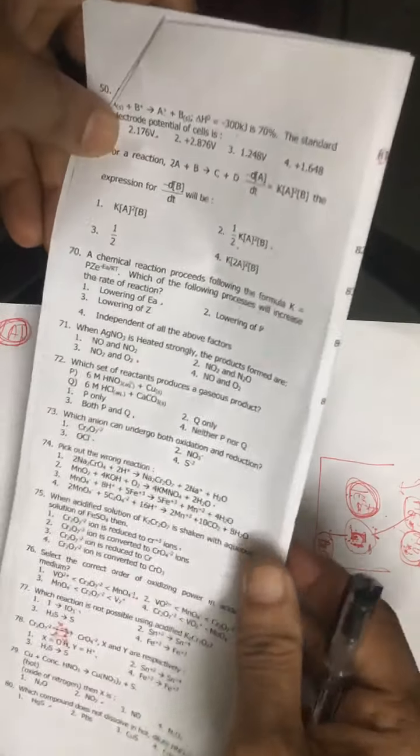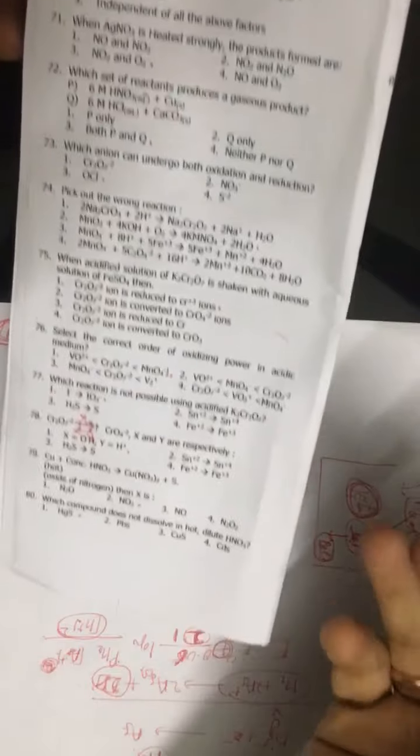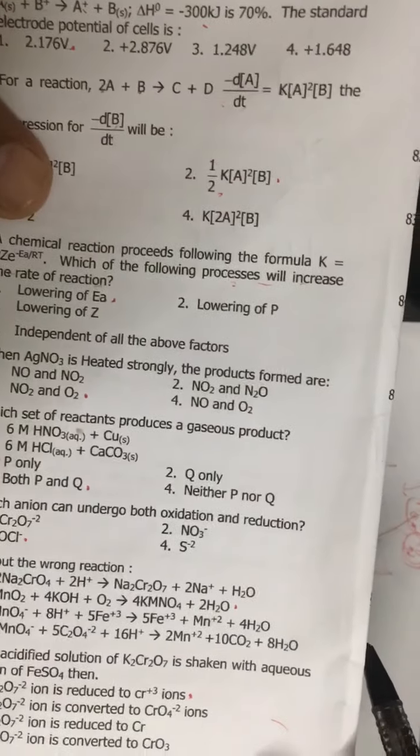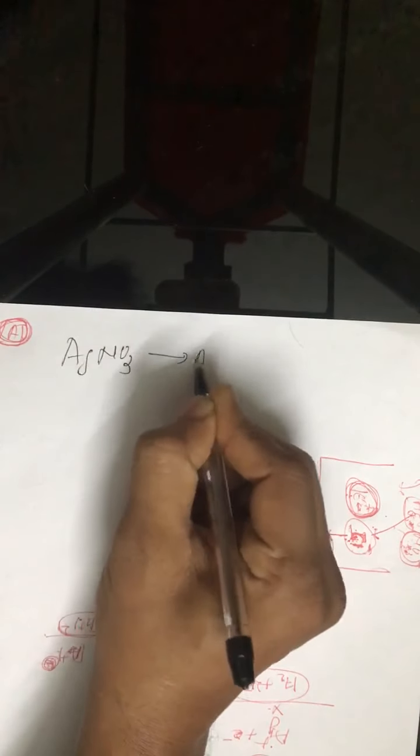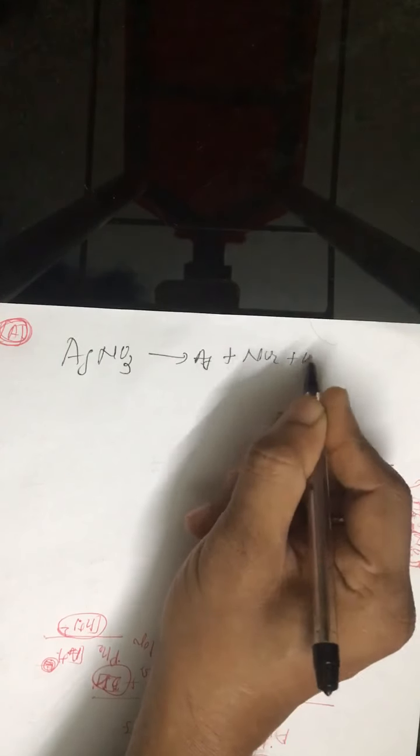Hello friends, we are continuing our discussion of repeaters part exam 8. Look at question number 71: when AgNO3 is heated strongly, it produces which gas? So AgNO3 on strong heating will produce silver metal plus NO2 plus O2. You have to balance this reaction or you just remember this reaction.